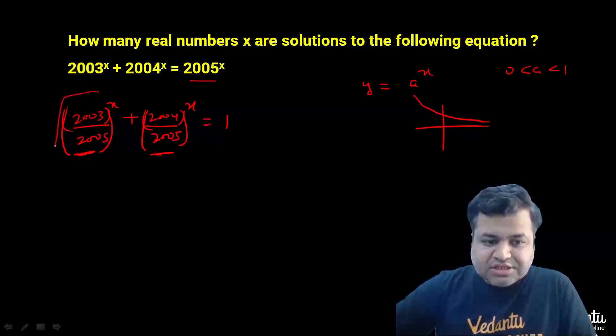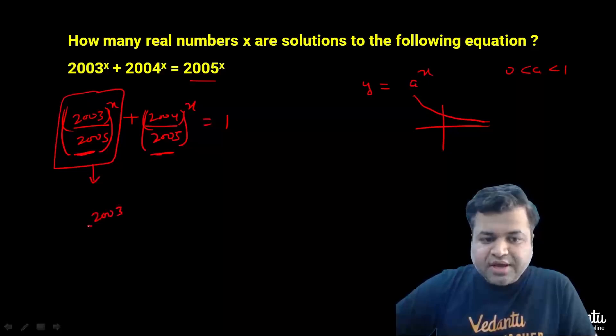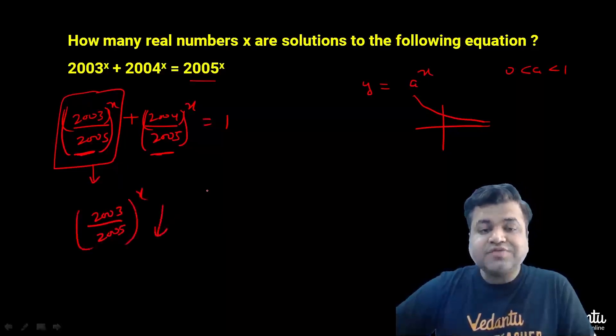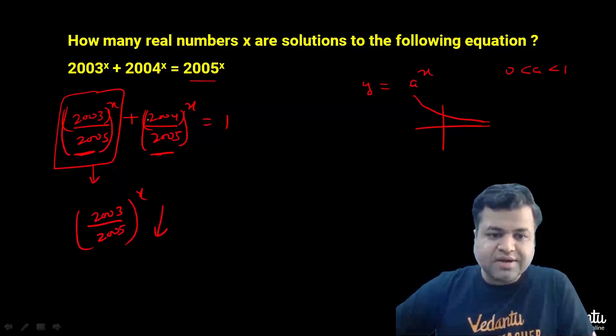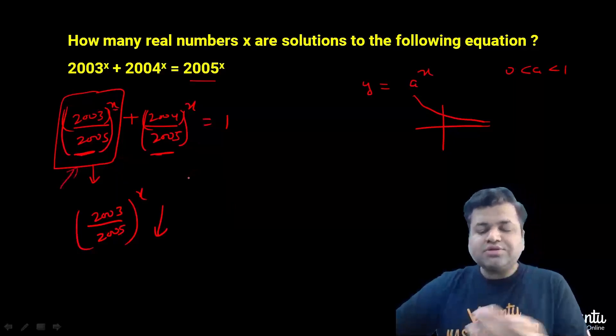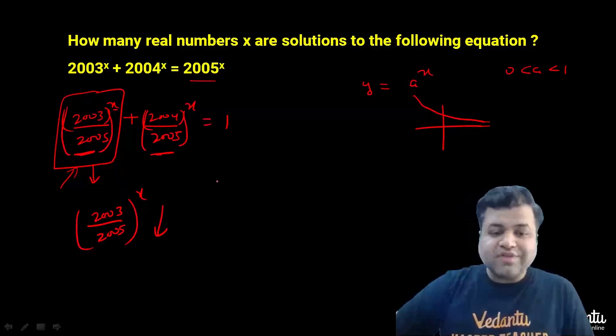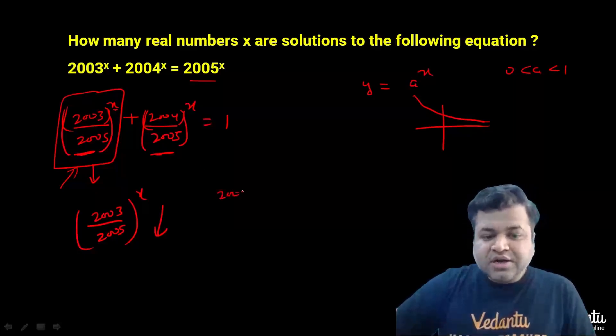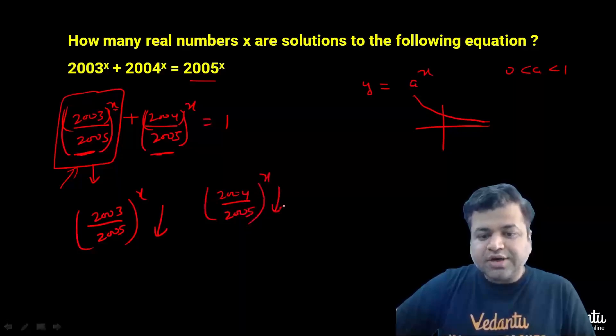So this value (2003/2005)^x will decrease as we keep increasing x. Same with (2004/2005)^x - that will also decrease because this quantity is less than 1.